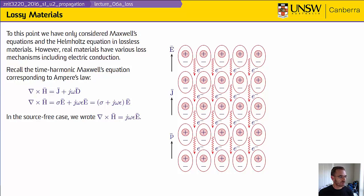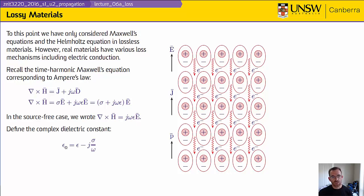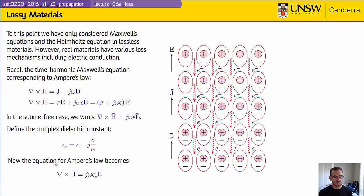We can write the displacement vector as epsilon E, so del cross H is equal to the sum of these two terms. Grouping the coefficients, we have sigma plus j omega epsilon, times E. In the source-free case we had del cross H equals j omega epsilon E, and this expression looks very much like that. If we factor out j omega, we end up with an expression that mathematically looks exactly like the source-free problem. So we define a complex dielectric constant epsilon complex by factoring out j omega, ending up with epsilon minus j sigma over omega. With that complex epsilon, Ampere's law becomes del cross H equals j omega epsilon complex times E — exactly the same mathematical form as the source-free case, even though we have currents flowing.